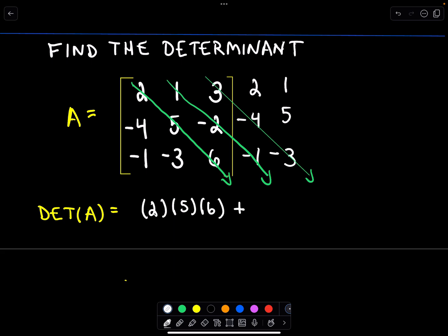So I'll take a 1 multiplied by negative 2 multiplied by negative 1 and another plus sign. And now let's go to our last arrow. So that's going to be the values 3 times negative 4 times negative 3.